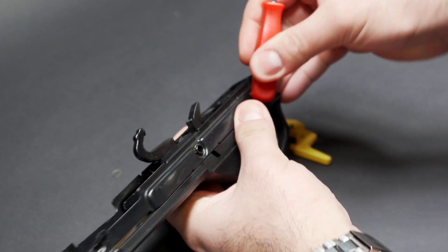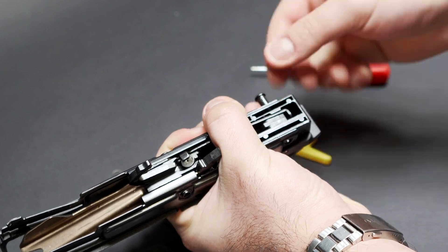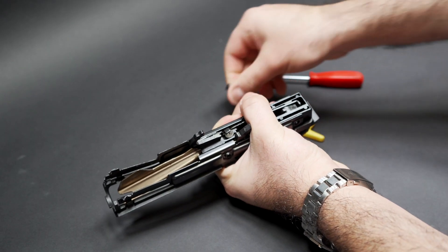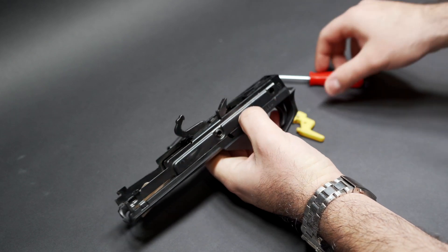The next thing to do is to remove this rear takedown pin. I'm going to push it out from here, and then I'm going to use the side of the trigger guard and the point of the pick to lever it out the rest of the way.